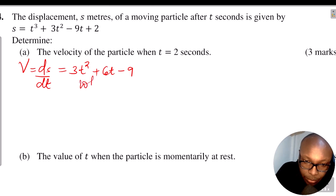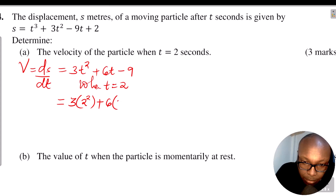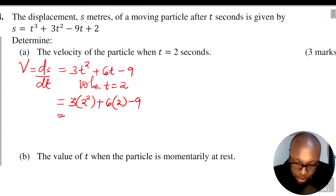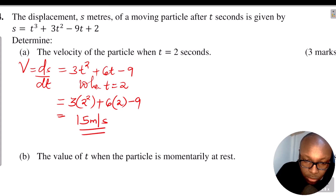When t = 2, you take this velocity expression and substitute t with 2 seconds. So this will be 3(2²) + 6(2) - 9. Work that out: 3 multiplied by 4 is 12, plus 6 times 2 is 12, subtract 9. That gives 15. So the velocity is 15 meters per second.